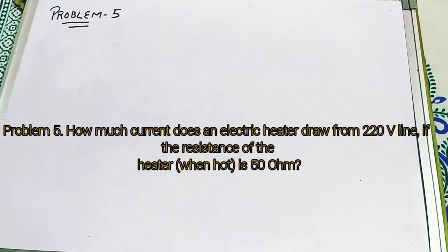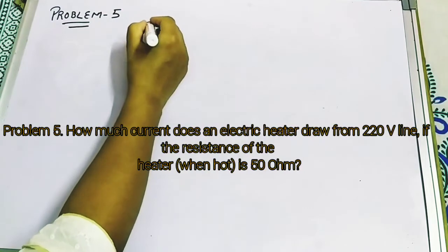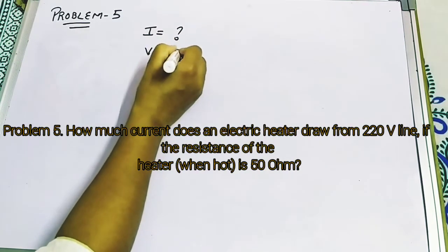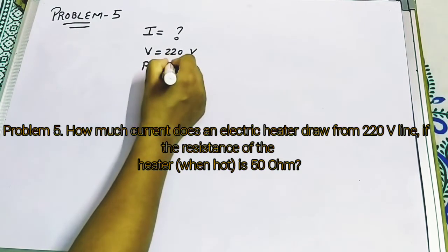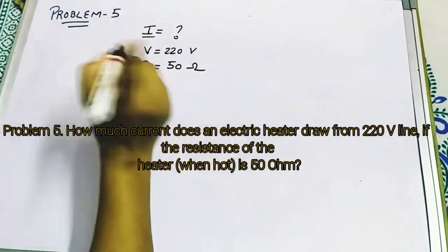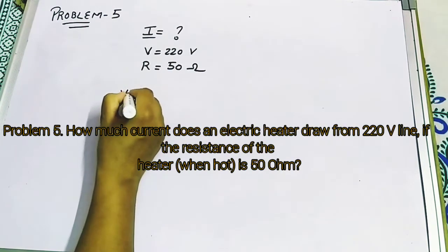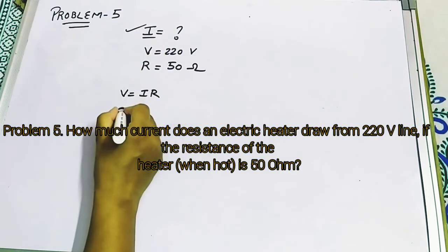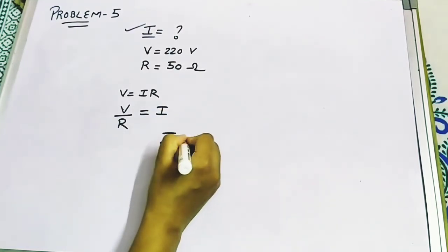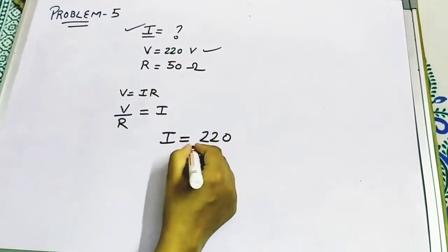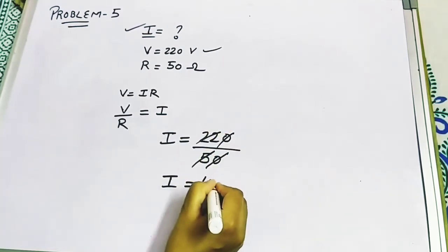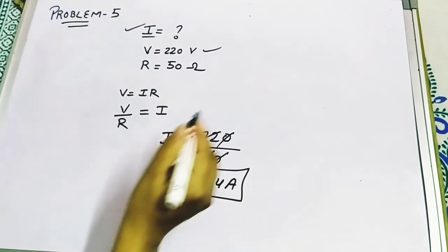Problem 5: How much current does an electric heater draw when the voltage is 220 volt and the resistance is 50 Ohm? Using Ohm's law, V equals IR, we need to find current, so I equals V upon R: that is 220 upon 50. Cancelling out, current equals 4.4 ampere. This numerical is based on Ohm's law.